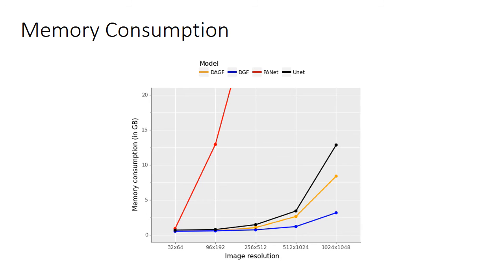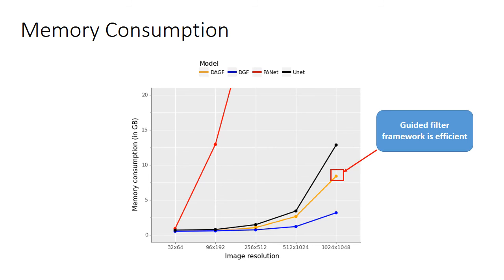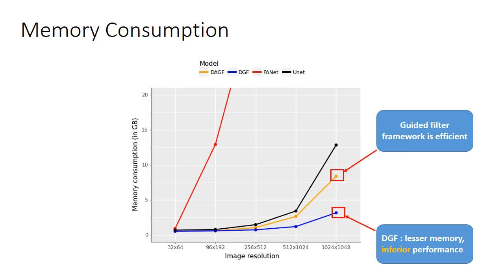We show a plot of memory consumed during training for our method and the baselines. The guided filter framework enables our method to be efficient. Patch-based methods such as PA-NET show exorbitant memory usage with increase in patch size, while DGF scales well with resolution. Although DGF occupies lesser memory than our method, it is inferior in performance as seen before.